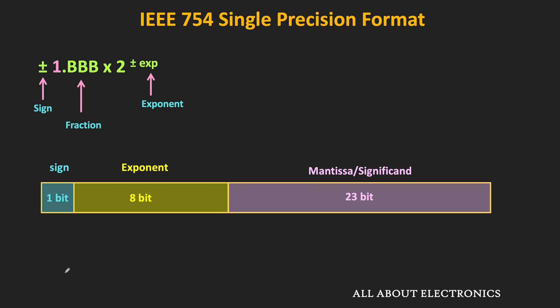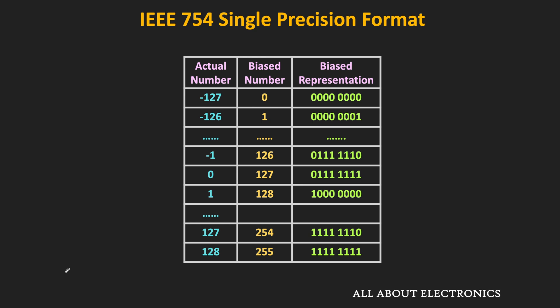In this IEEE single precision format, the exponent value is stored in 8 bits. In 8 bits, we can represent any number from 0 to 255. Out of this total range, the values of all zeros and all ones are reserved for special numbers. So in this video, let's see how to represent these special numbers in the IEEE format.